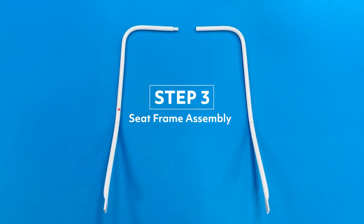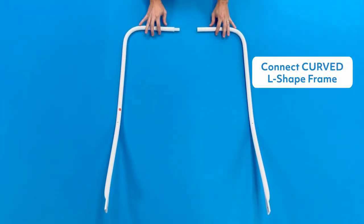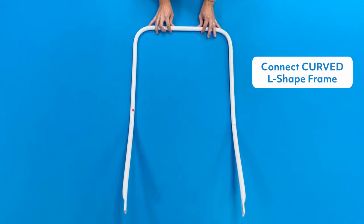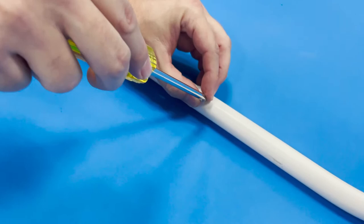Step three, seat frame assembly. The ends of the bent L-shaped seat frame should be facing up. Secure the set screw with the Phillips head screwdriver.